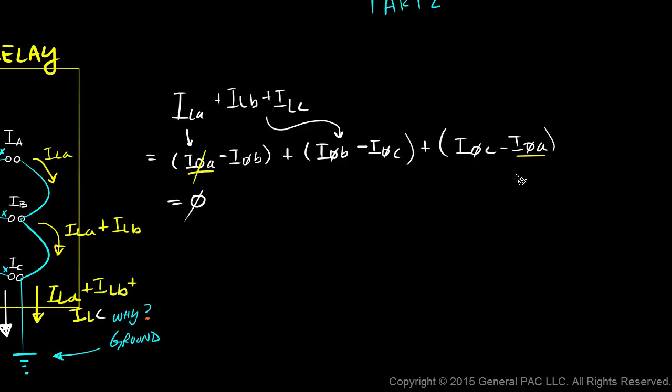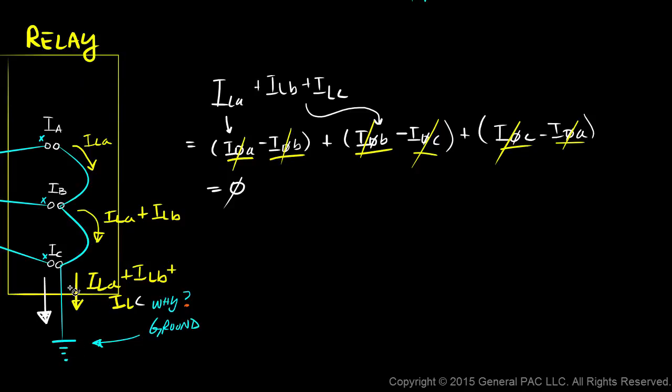So, that cancels out. Right? I phase b is here and negative I phase b is there. So, this cancels out. And I phase c and negative I phase c cancel. So, under any sort of condition, we don't have any current that's actually flowing to ground.